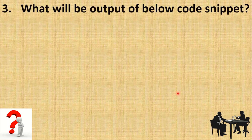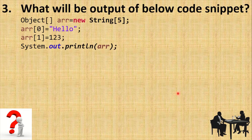Next is: what will be the output of the below code snippet? Here we have a code where we have declared an array and are trying to add two elements, and in the end we are trying to print the whole array. You can pause the video and think about the answer.